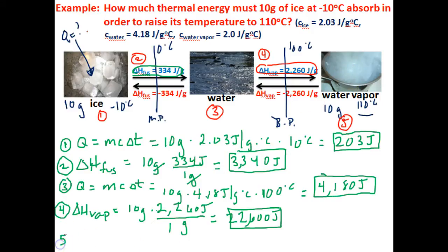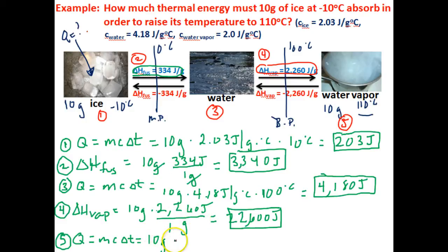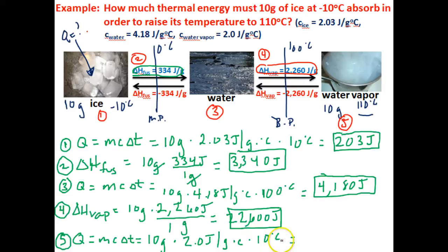In step five, we need to figure out how much thermal energy this water vapor will need to absorb to go from 100 degrees Celsius to 110 degrees Celsius. We use the Q = mcΔT formula again. The mass of this water vapor is still 10 grams, times the specific heat of water vapor which is 2.0 joules per gram degree Celsius, times the change in temperature of 10 degrees Celsius. That gives us 200 joules.